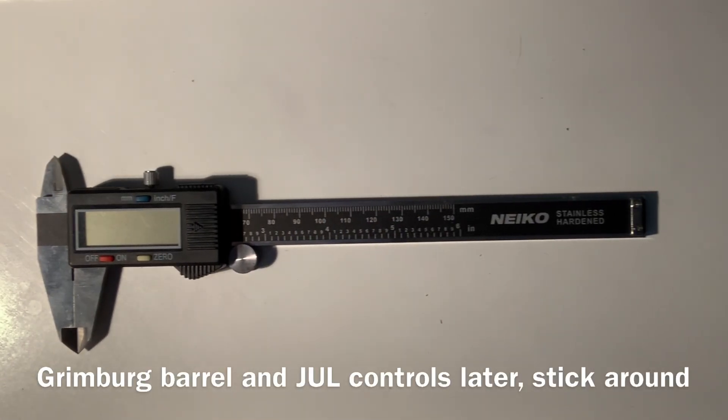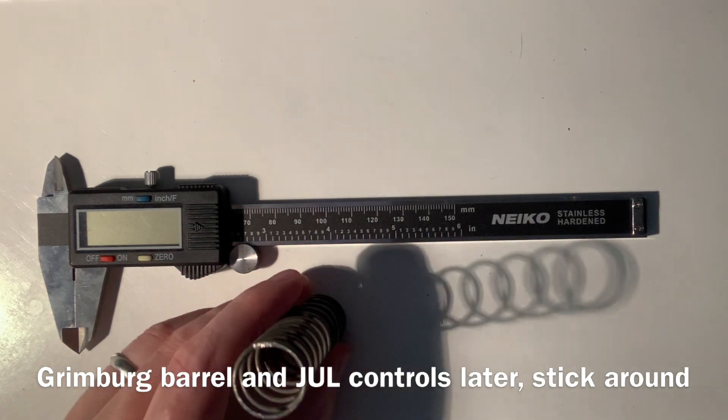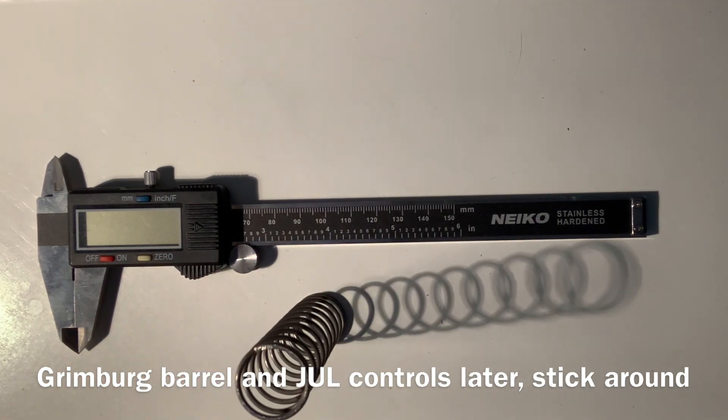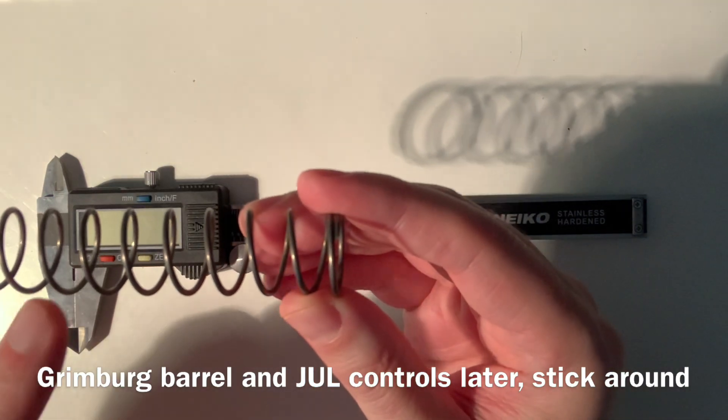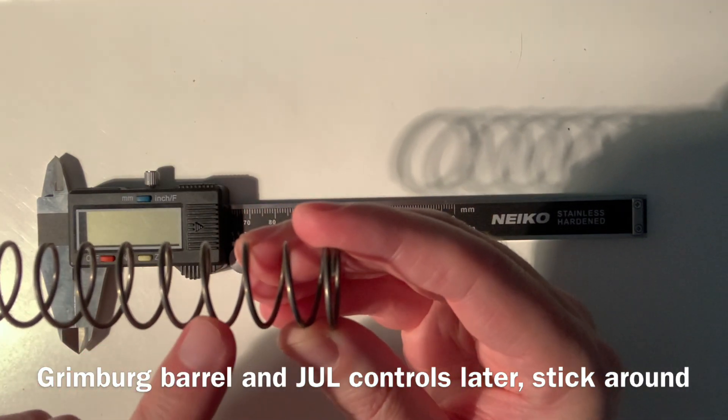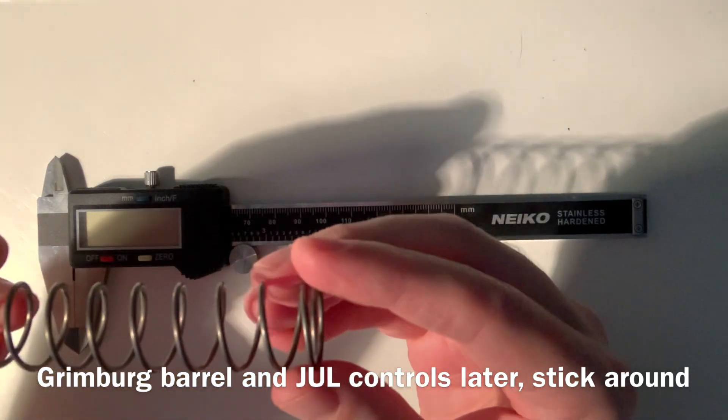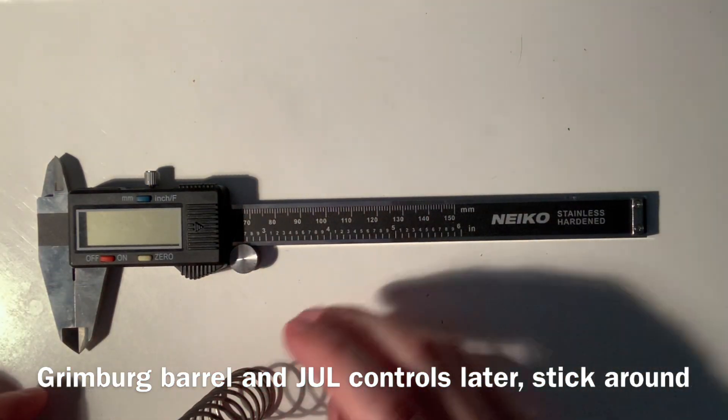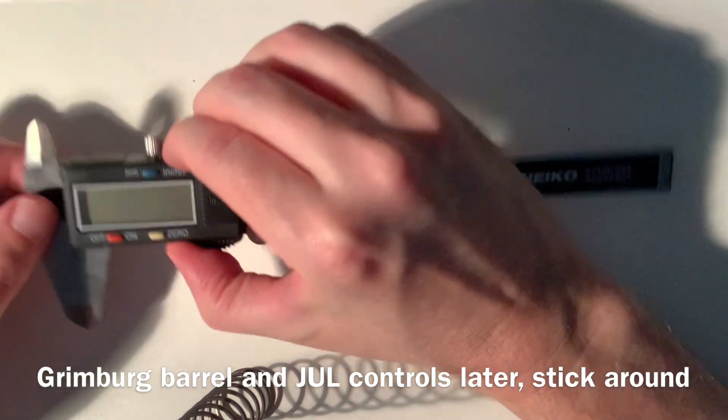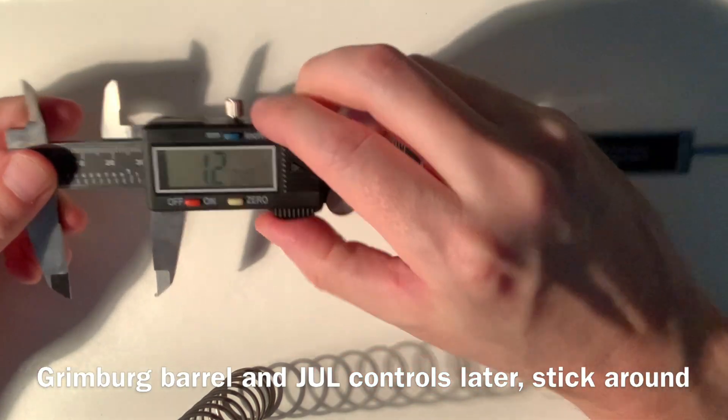Okay, let's do a couple measurements. This is an FSC spring here. Take a look at it, you can see that there are one, two, three, four, five, six, seven, eight, nine, ten, eleven coils. Let's take a look and see what is the inner diameter.